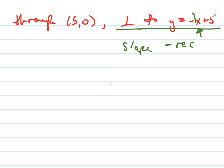So what's the negative reciprocal, or the opposite reciprocal, of negative 1? 1. Positive 1. Very good. So our slope for our line is going to be positive 1.